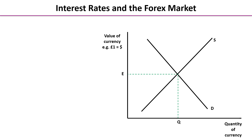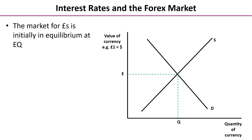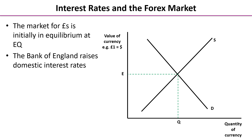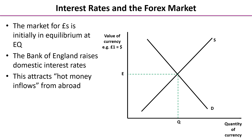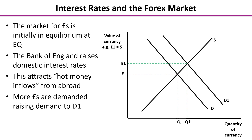Let's have a look at a diagram — this is one of the occasions where you will use a micro diagram in a macro paper. We have the price or value of a currency on the y-axis (one pound equals dollars) and the quantity of currency on the x-axis. We are initially in equilibrium at exchange rate E and quantity Q. The Bank of England raises domestic interest rates, which attracts hot money — it flows to the UK to earn higher interest. Those investors must convert their billions of dollars into sterling, so the demand for sterling rises on the forex market, shifting demand to the right, increasing the exchange rate and the quantity of sterling.